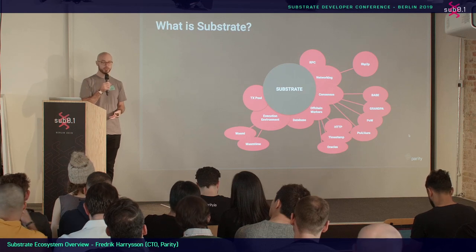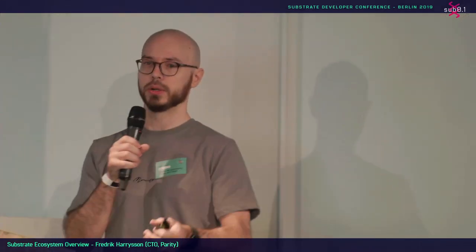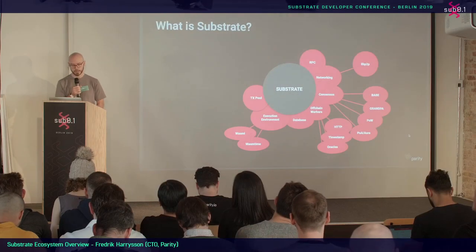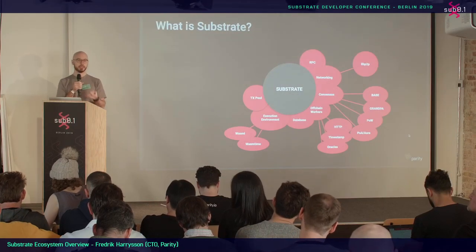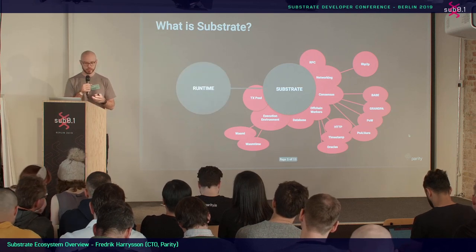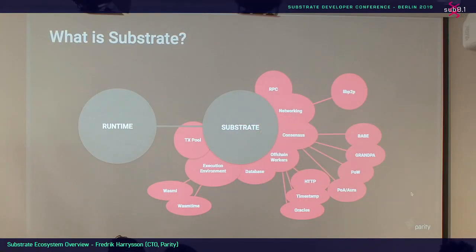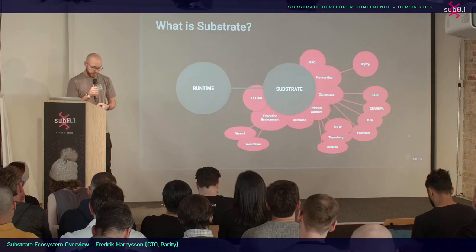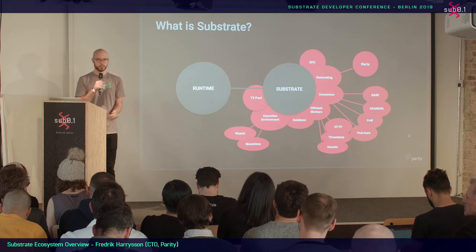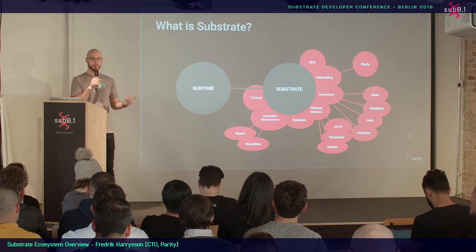On the execution environment side, we've always had wasmi — an interpreter for wasm — but we've recently started adding wasmtime, and we will be adding support for LightBeam, our own streaming compiler. This lets us do much more complicated things: an interpreter is kind of slow, so compiling wasm to native code makes things a lot better. These are core fundamental improvements to make substrate even better. We haven't really talked about the runtime yet — the runtime is where you add logic specific to your chain, and we've done a lot on that side.